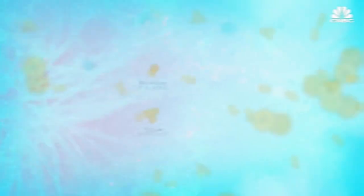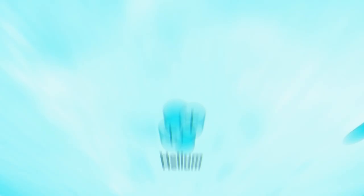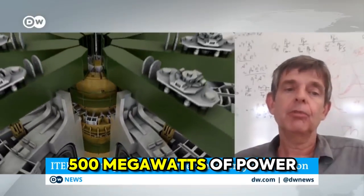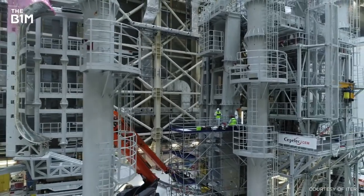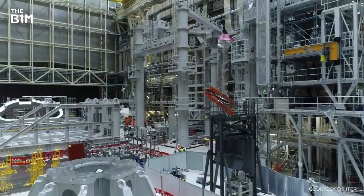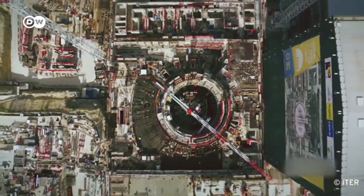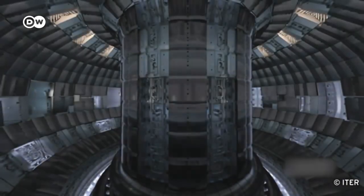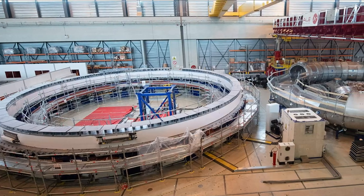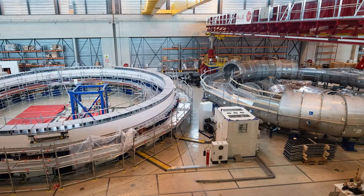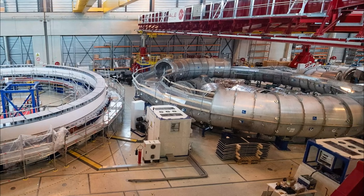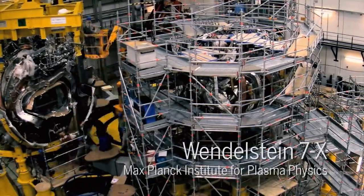By fusing two separate forms of hydrogen known as deuterium and tritium, the device would generate 500 megawatts of power, which is 10 times the energy it would require to operate. ITER will be a brand new type of nuclear fusion device when it is operational in 2025, measuring 100 feet both by height and diameter.